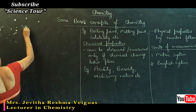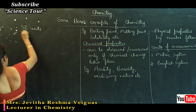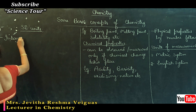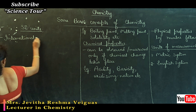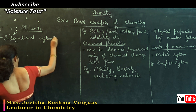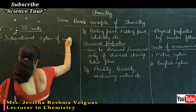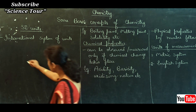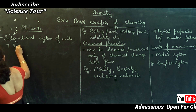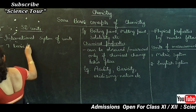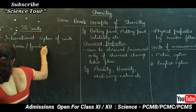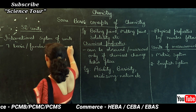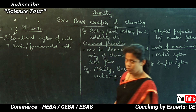SI units — what are SI units? SI stands for International System of Units. There are seven basic or fundamental units in the SI system, given for seven fundamental physical quantities.